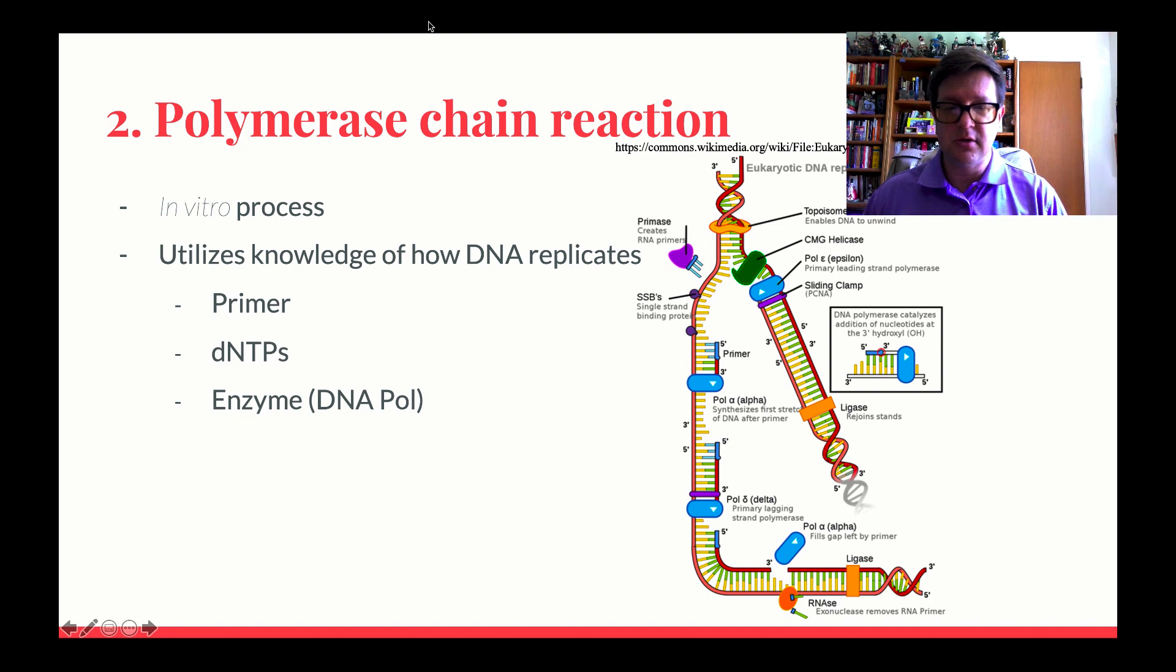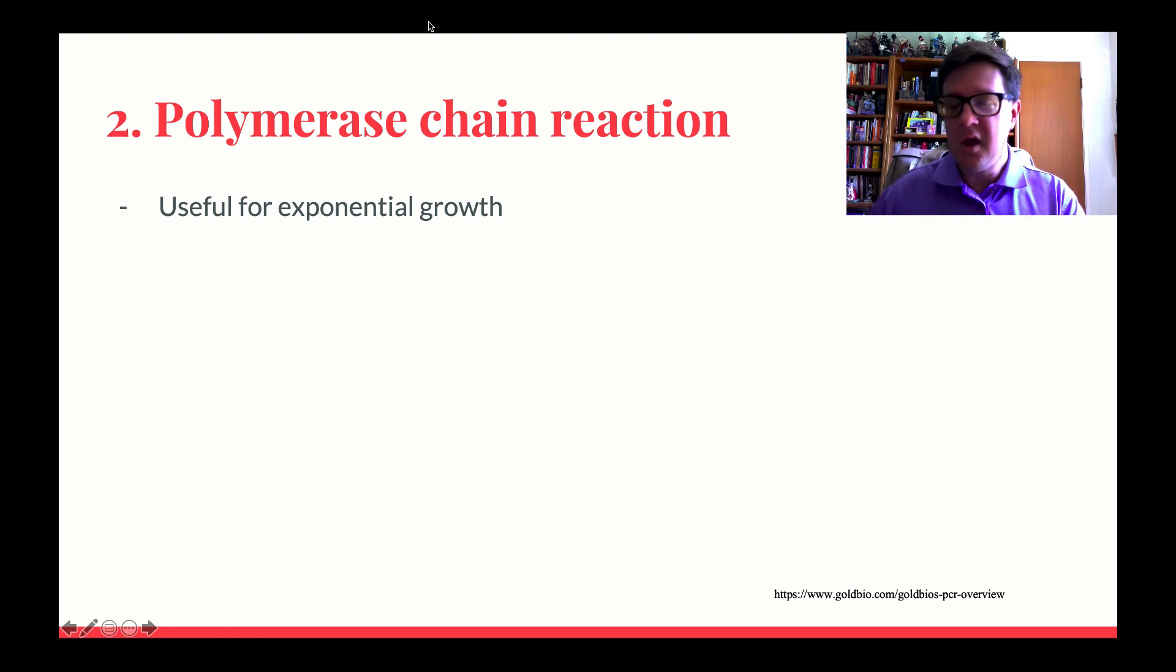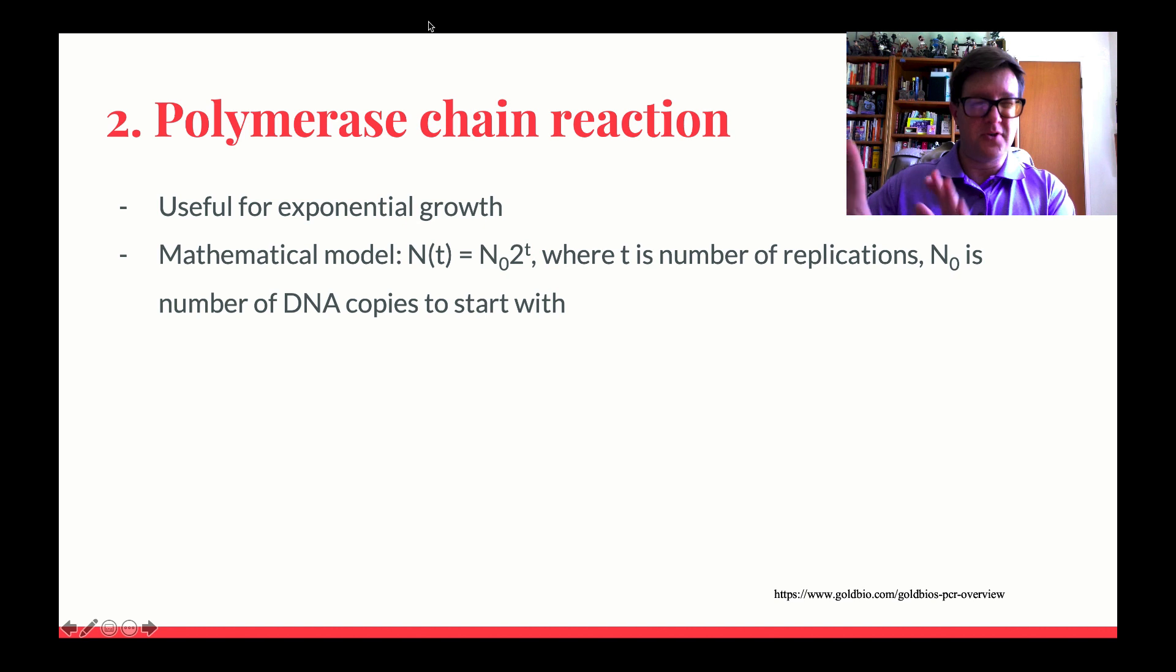So that would be like a dATP or a dTTP or a dCTP or a dGTP. So rather than just having one phosphate, we're going to have all three and we're going to end up leaving off those last two. And that's the energy source so that we can actually replicate DNA. And we're obviously going to need some type of enzyme, which would be DNA polymerase. This would be what happens inside of cells naturally, in vivo process. So it turns out we can get around this in vitro, where we don't need to worry about, is it going to be a leading strand? Is it a lagging strand? Do we need to remove those RNA primers? None of that turns out to matter when we use PCR.